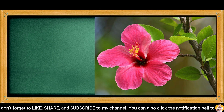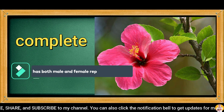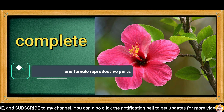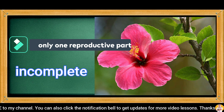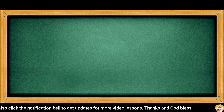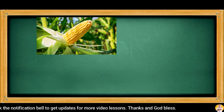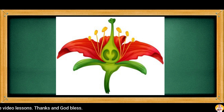Flowers can be classified as complete and incomplete. A flower is said to be complete when it has both male and female reproductive parts. On the other hand, it is incomplete when it has only one reproductive part, either male or female. Most plants important to agriculture, like corn, rice, wheat, and soybeans, are flowering, which means they undergo sexual reproduction. Flowers are parts that indicate a plant is producing seeds.